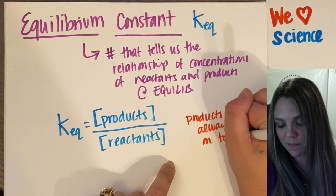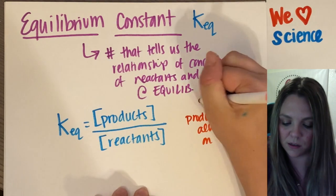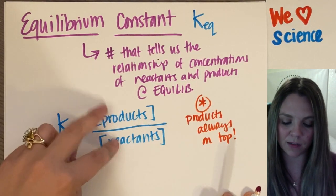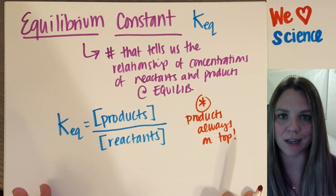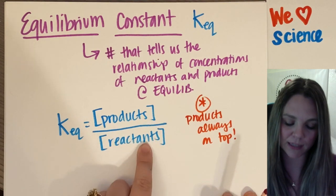Always on top. Please don't make that mistake. Number one mistake, honestly, that's made calculating the K of equilibrium is that you flip-flop and you put the reactants on the numerator accidentally. Don't do that. Your products are on top, reactants are on the bottom.